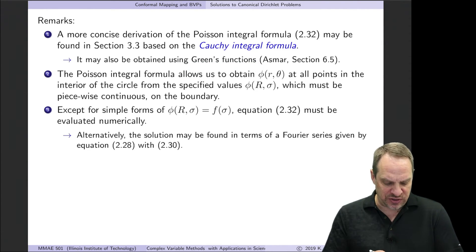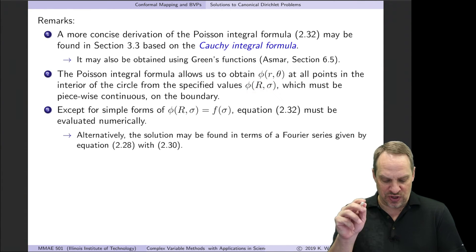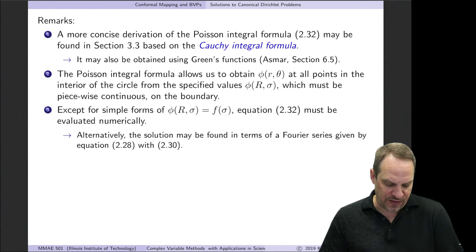So again, the whole point of the Poisson integral formula is it allows us to get the phi of r theta, so the values of the dependent variable everywhere throughout the domain, based on the solution, phi of capital R sigma boundary conditions on the boundary.